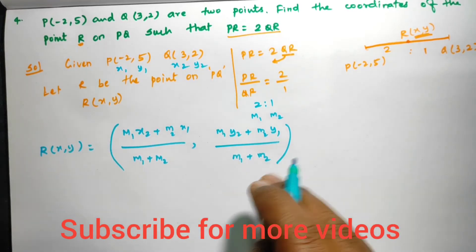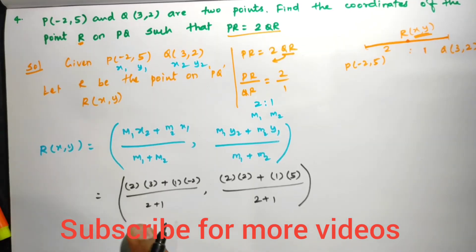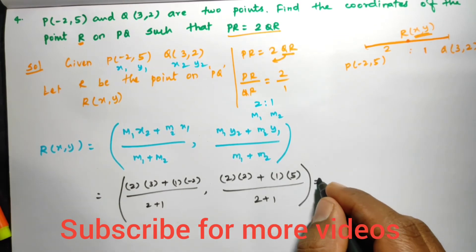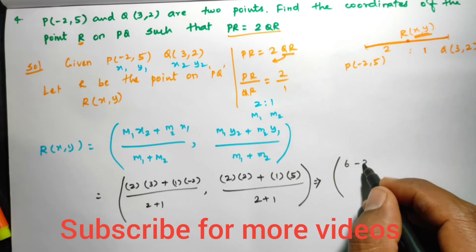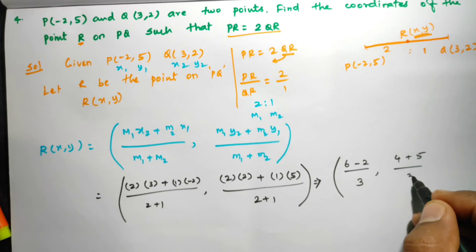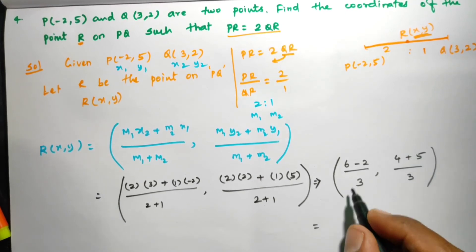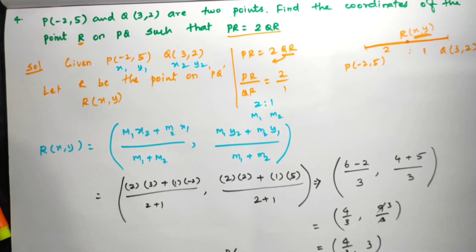Applying the values and simplifying, we get (2(3) + 1(-2))/(2+1), (2(2) + 1(5))/(2+1). This gives us (6 - 2)/3, (4 + 5)/3, which equals 4/3, 9/3. Simplifying further, 9/3 = 3, so the required point R is (4/3, 3).